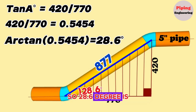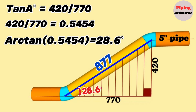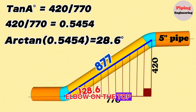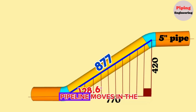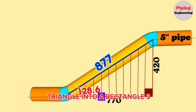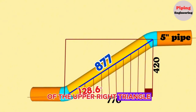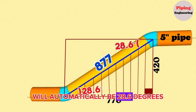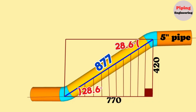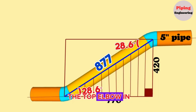28.6 degrees is one of the acute angles of the right angle triangle. Now let's calculate the cutting angle of the second elbow on the top. Since the pipeline moves in the same plane, let's complete this right triangle into a rectangle. Then the acute angle of the upper right triangle will automatically be 28.6 degrees, which is also the cut angle of the top elbow.